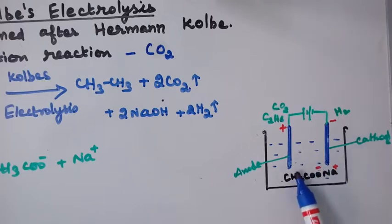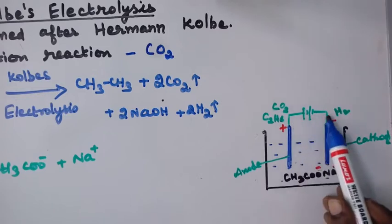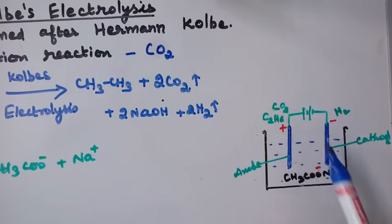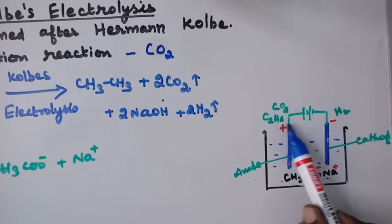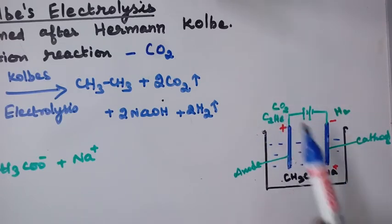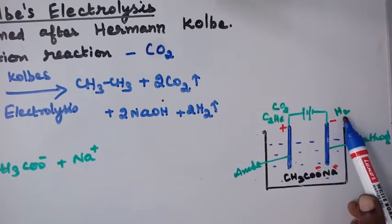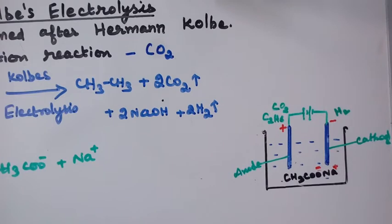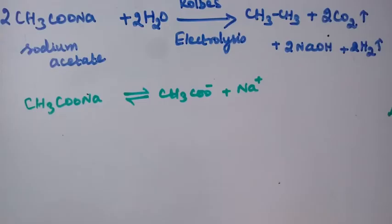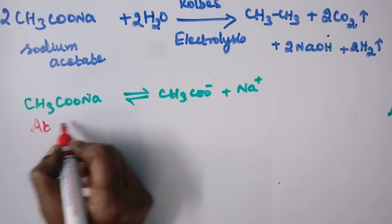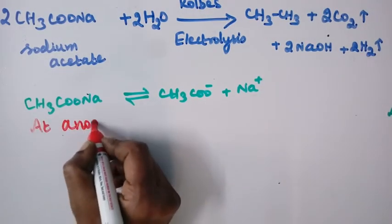The acetate ion CH3COO⁻ goes to the anode and discharges an electron there. The product obtained at the anode is ethane and carbon dioxide. The product obtained at the cathode is hydrogen gas. Now we'll see the equation — at the anode, oxidation takes place.